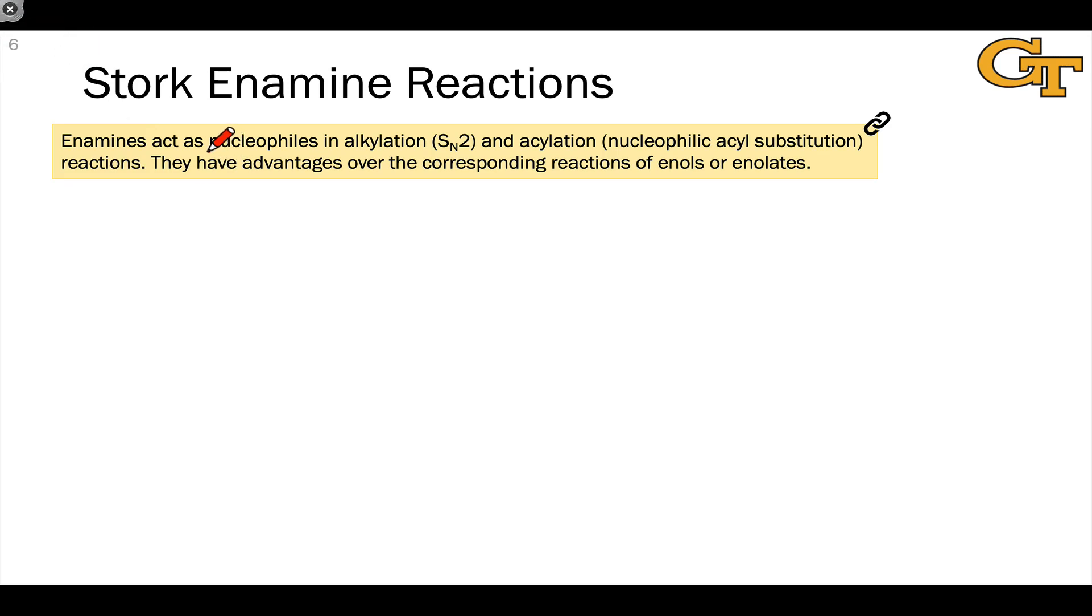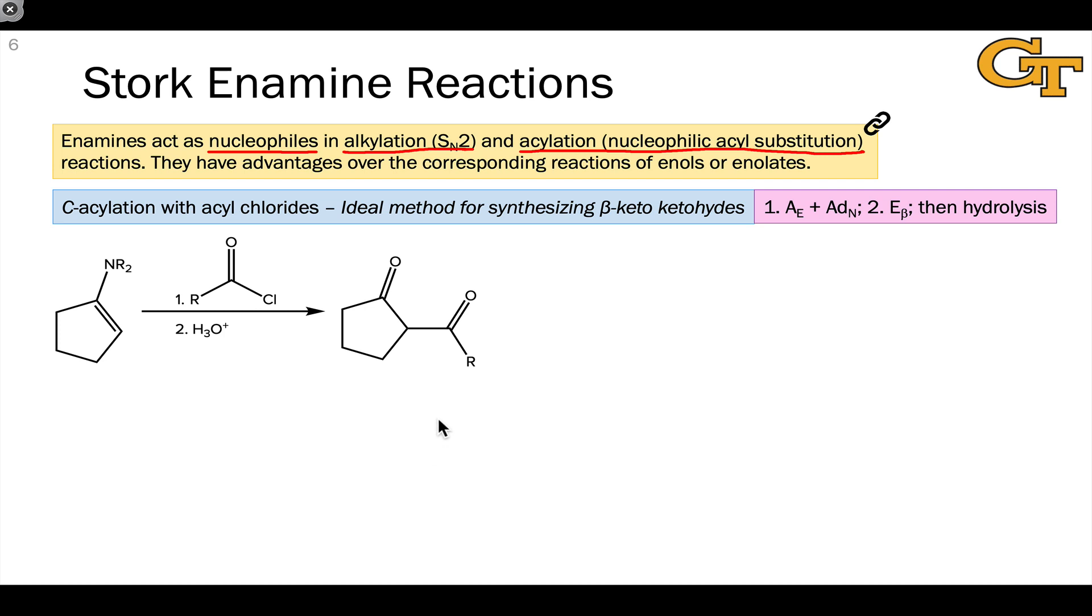We've seen that enamines are nucleophilic at their alpha carbons, and so in theory they can act as nucleophiles in, for example, alkylation reactions and acylation reactions involving SN2 and nucleophilic acyl substitution type mechanisms. These are called Stork enamine reactions.